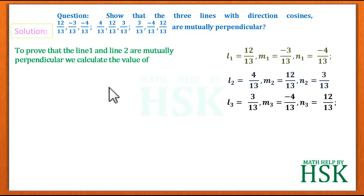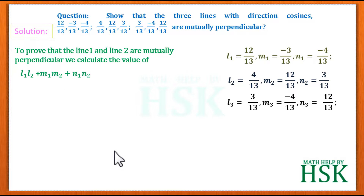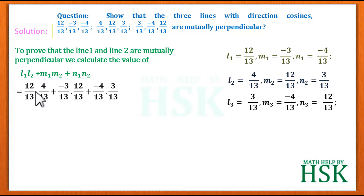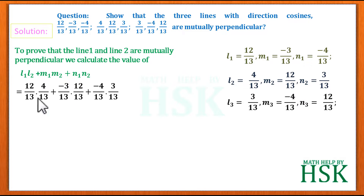First we prove that line 1 is perpendicular to line 2. For that we calculate l1·l2 + m1·m2 + n1·n2, which equals (12/13)·(4/13) plus m1·m2 which is (−3/13)·(12/13), plus n1·n2 which is (−4/13)·(3/13).